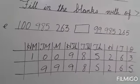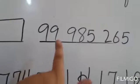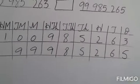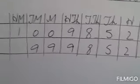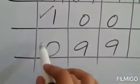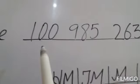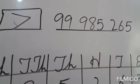Now let us do the E part. The numbers are 100,985,263 and 99,985,265. By putting these values in the place value chart starting from one's place, we see that one number has a digit at 100,000,000 and the other is at 10,000,000. The second number's 100,000,000 place is empty, meaning it is 0. Since 1 is greater than 0, the number 100,985,263 is greater than 99,985,265.